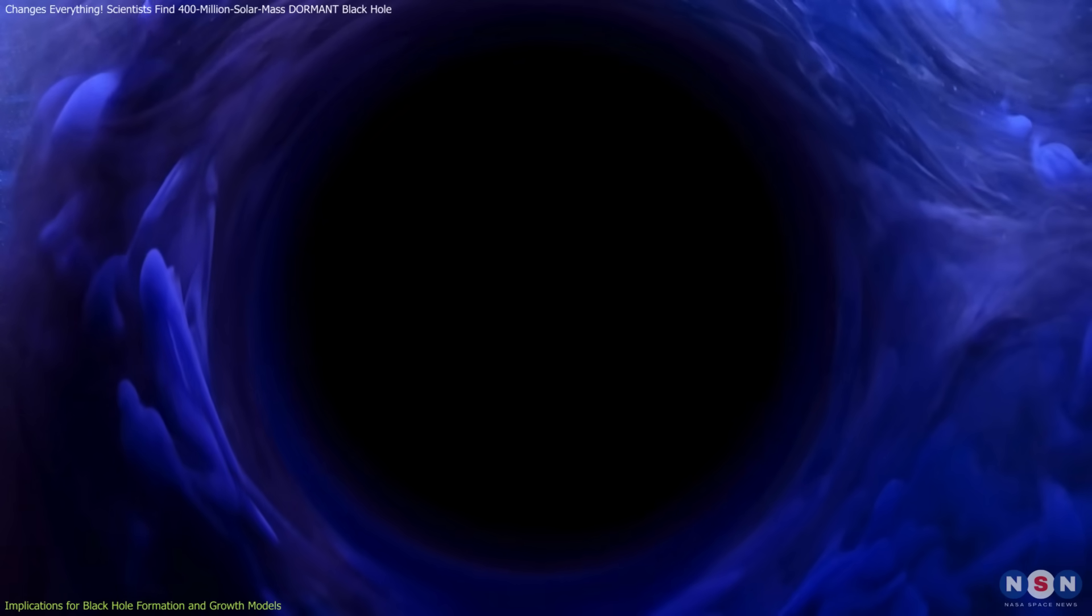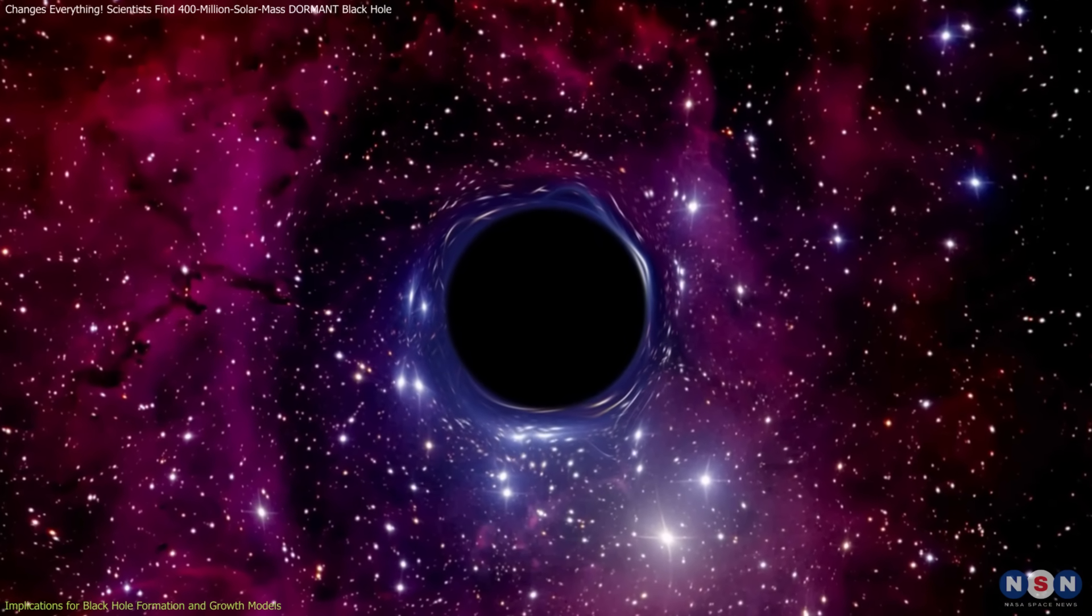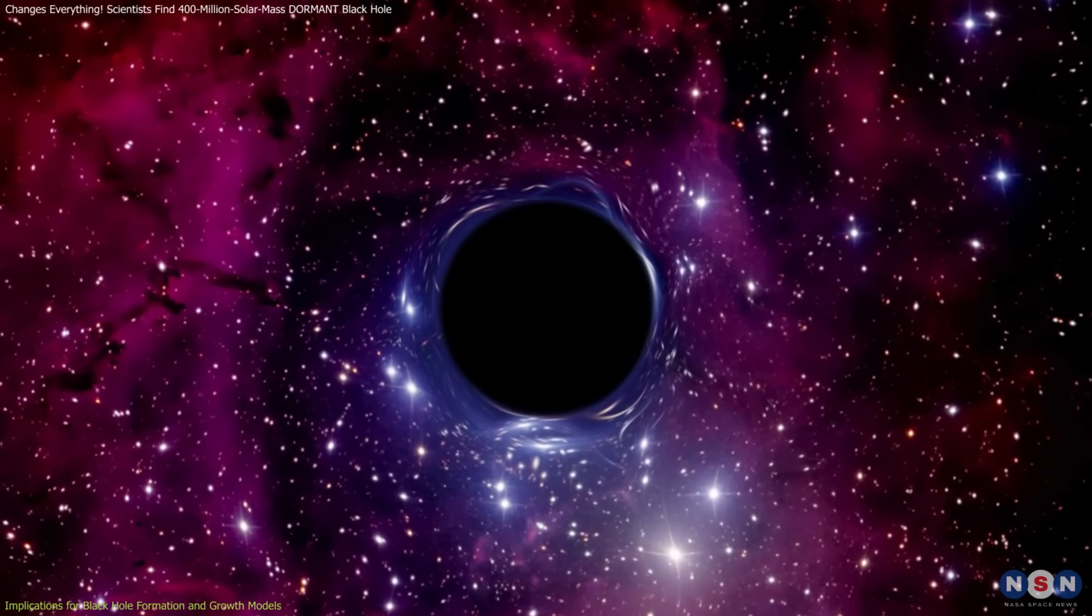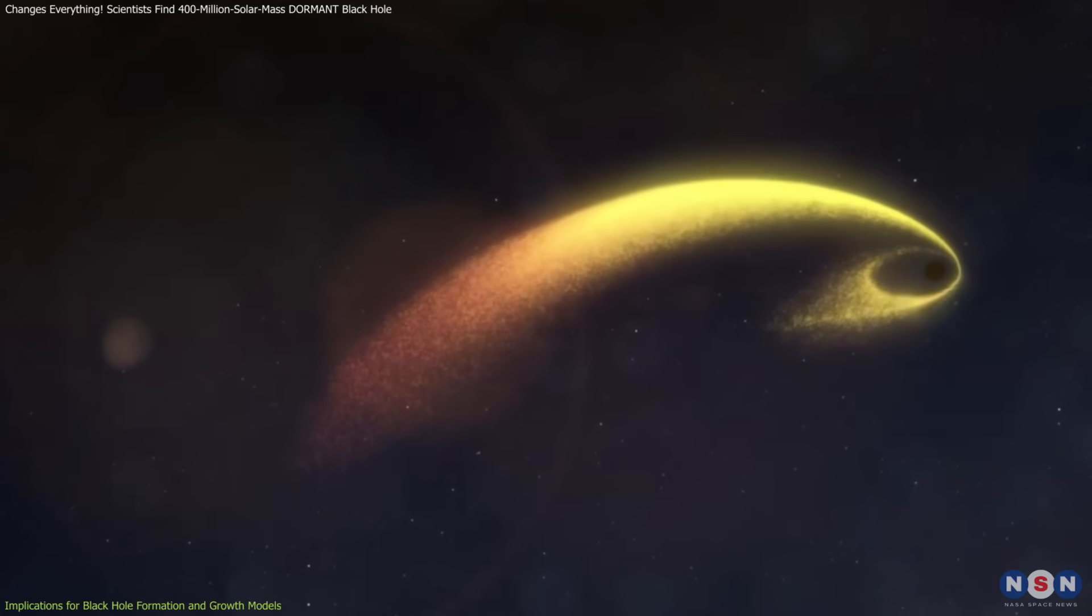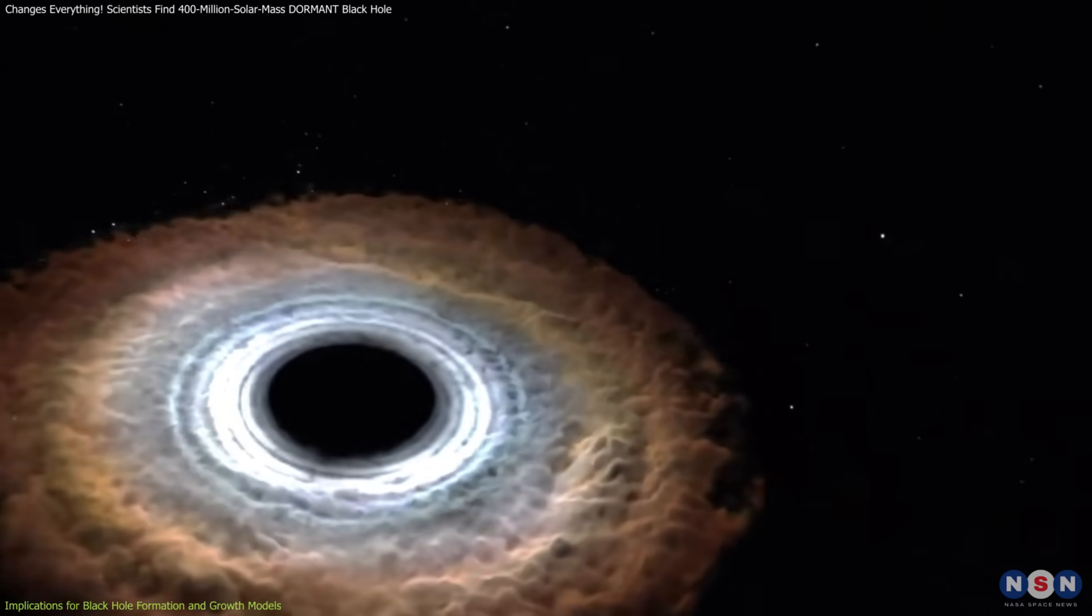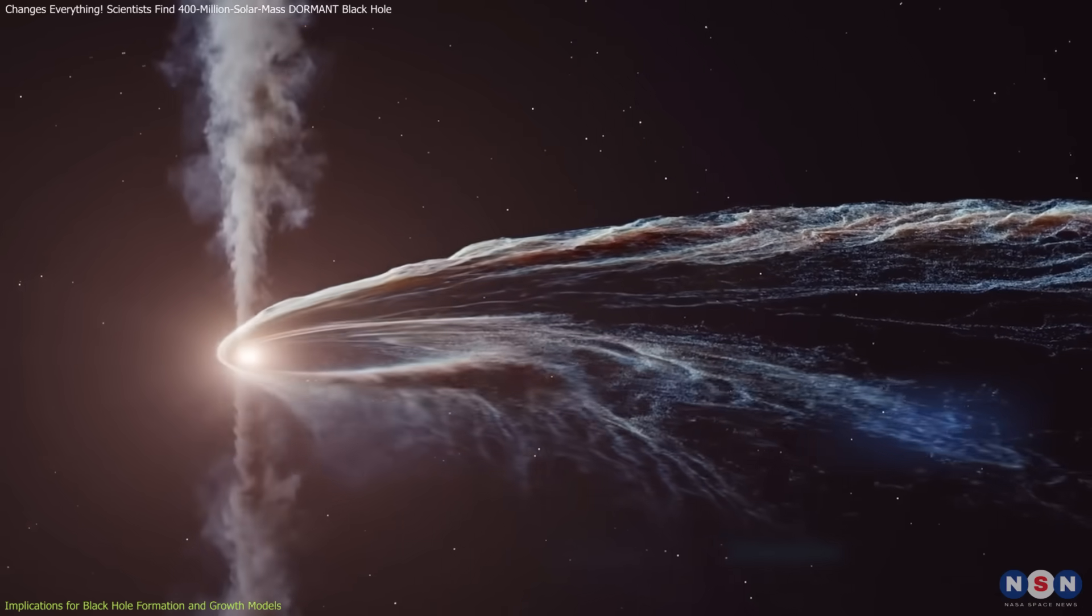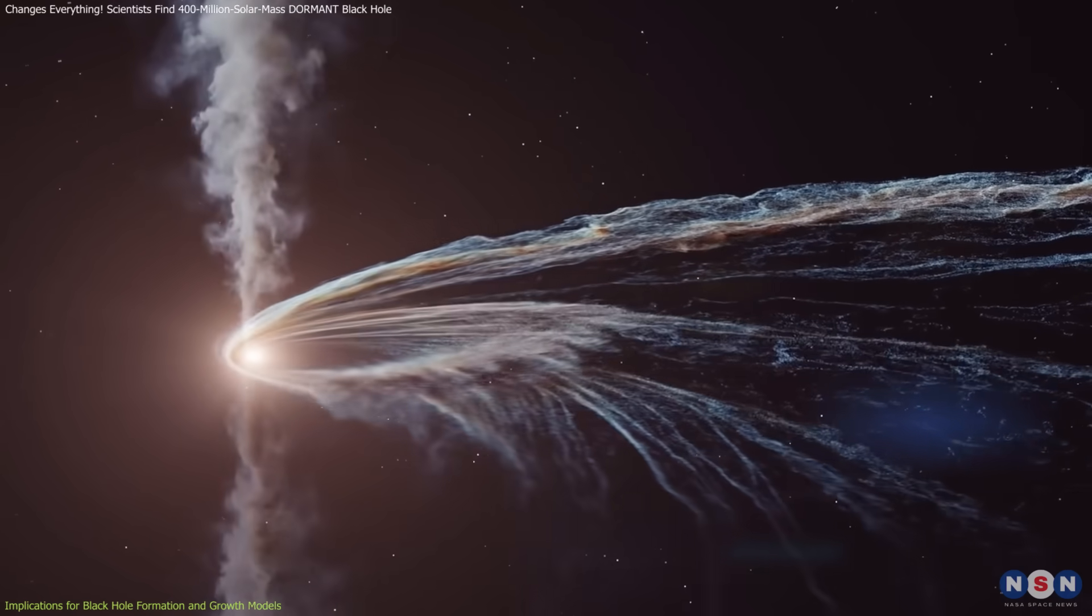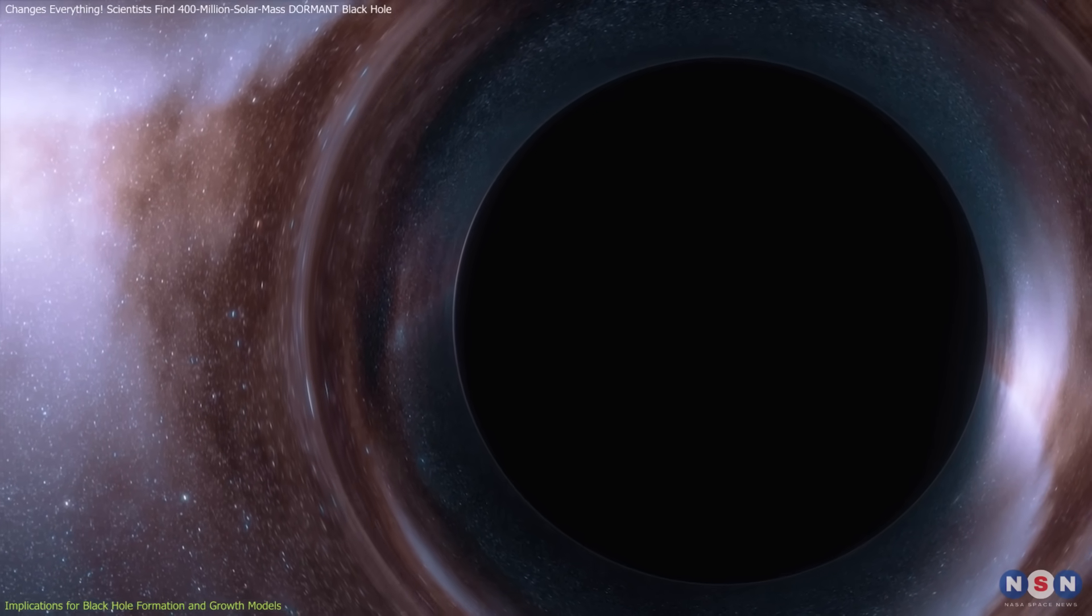However, this dormant black hole's size and early existence defy these expectations. How could something so massive have formed so quickly after the Big Bang? One explanation is that black holes can undergo periods of super-Eddington accretion, where they grow at rates exceeding theoretical limits. Imagine a black hole binge-eating, devouring gas and matter at a frenzied pace before settling into a long nap. This cyclical pattern of hyperactivity and dormancy could account for its massive size.